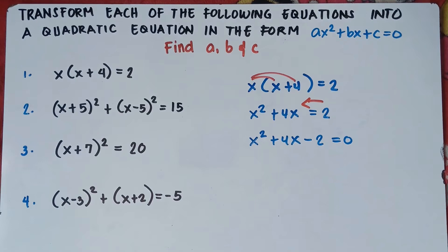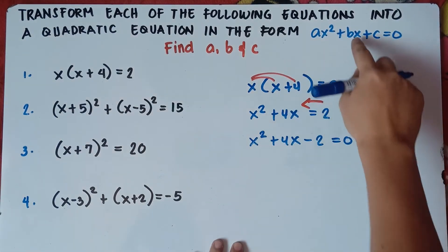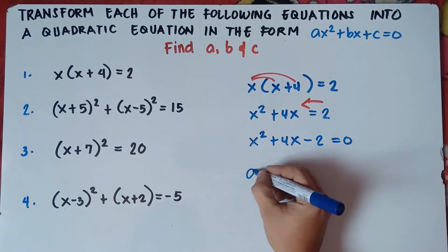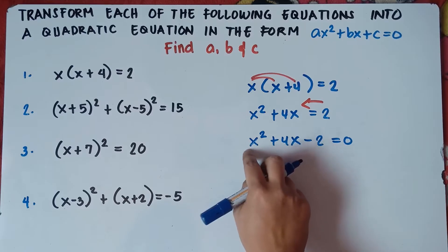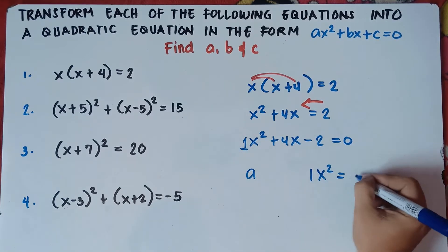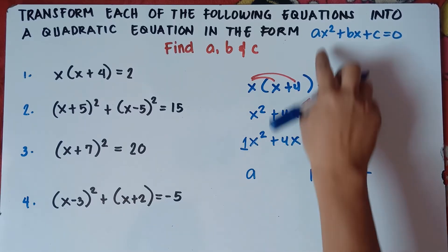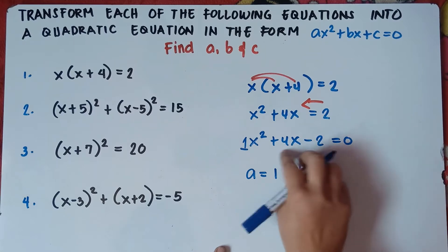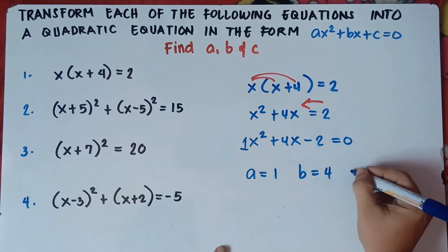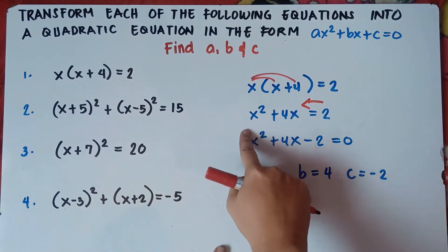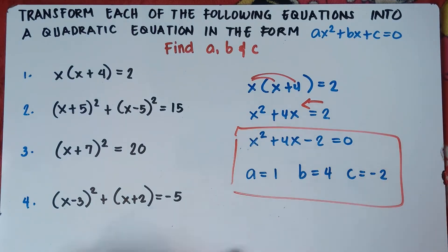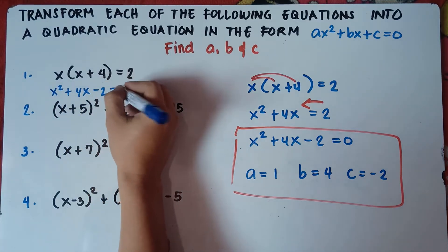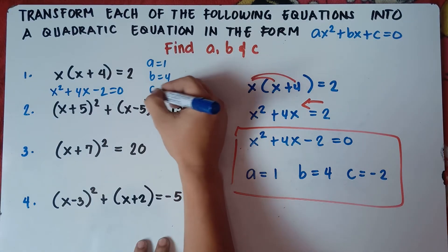So we get x² + 4x − 2 = 0. Check if it's arranged — yes, x squared comes first before the linear term (bx), then C is last, the constant, which is negative 2. So our A, the number beside x squared — if you don't see any number, it's understood to be 1 — our A is 1. Our B, beside x, is 4. And our C is negative 2.